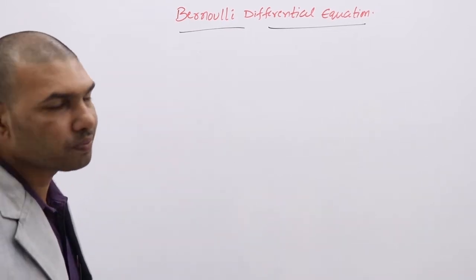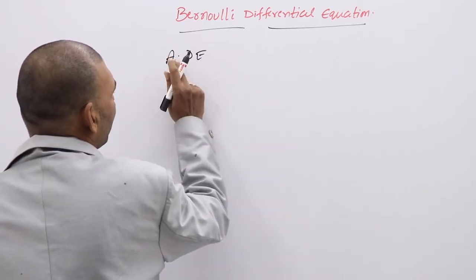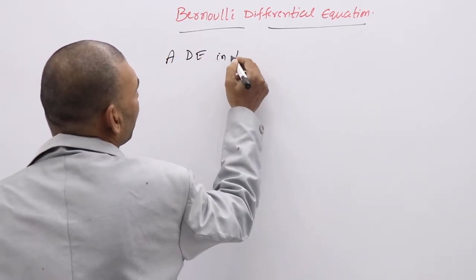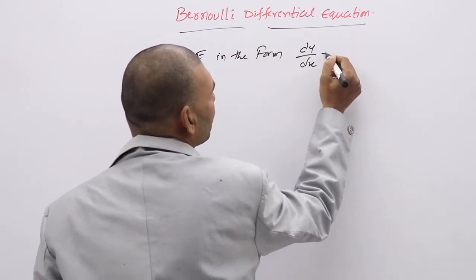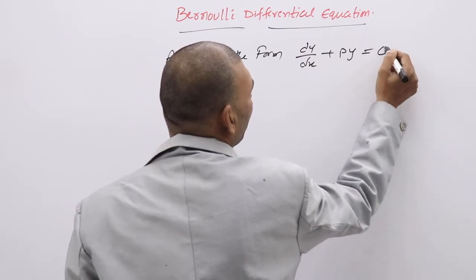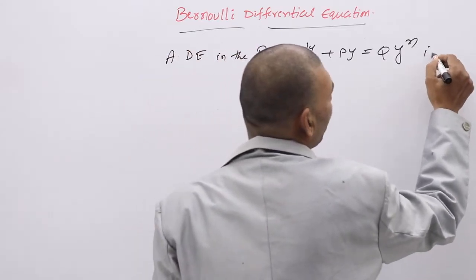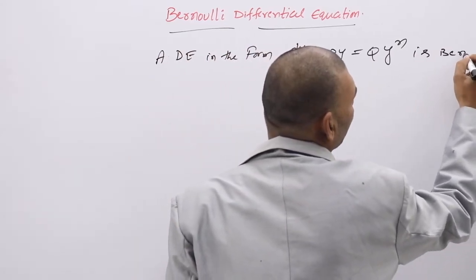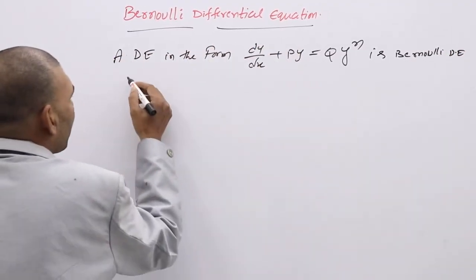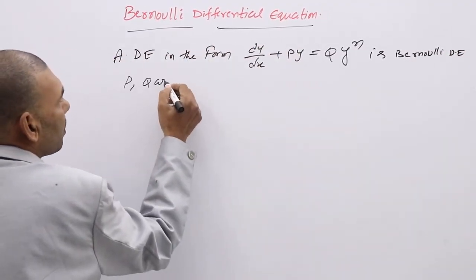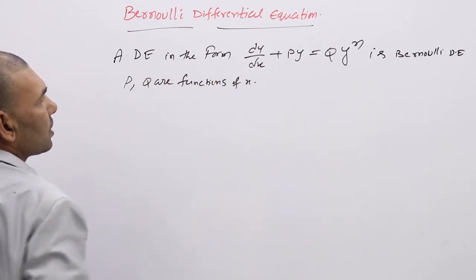A Bernoulli differential equation is a DE in the form dy/dx plus Py equal to Qy^N. This is called a Bernoulli differential equation, where P and Q are functions of x.